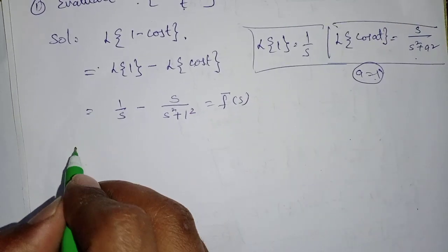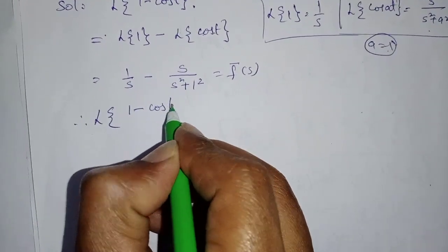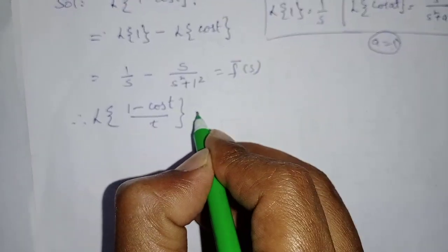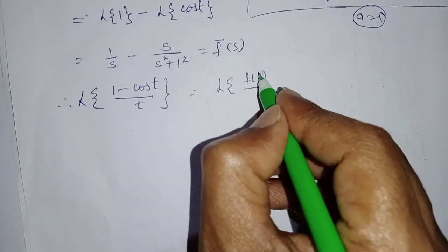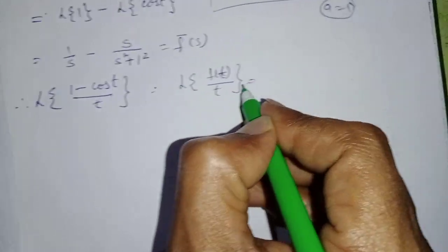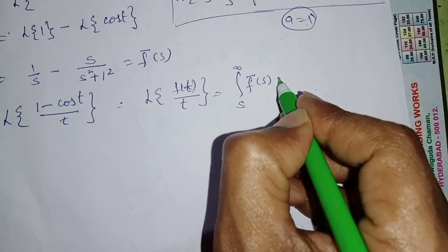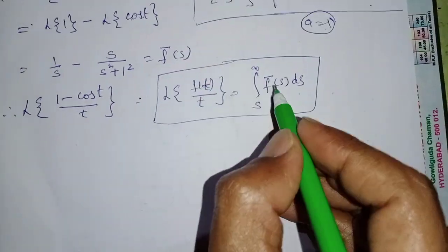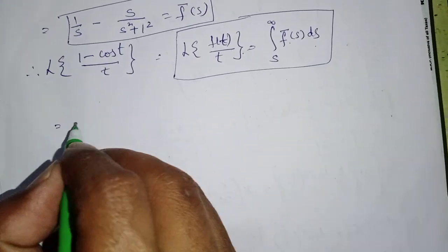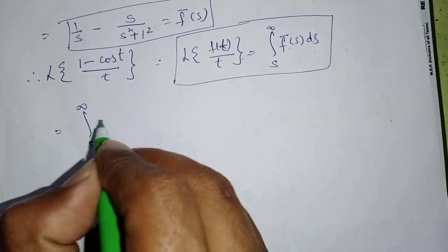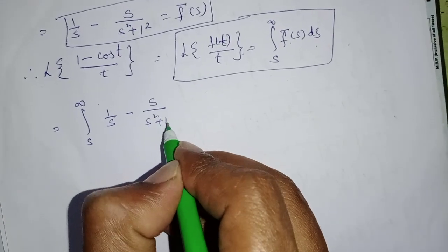The given question is L{(1 - cos t)/t}. This is the division form L{f(t)/t} = ∫_s^∞ F̄(s) ds. Substituting F̄(s), this becomes the integral from s to infinity of [1/s - s/(s² + 1)] ds.